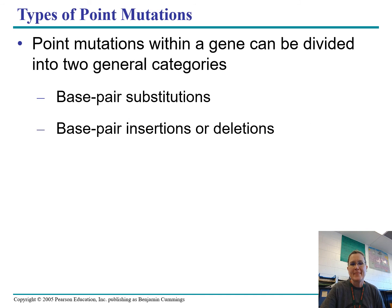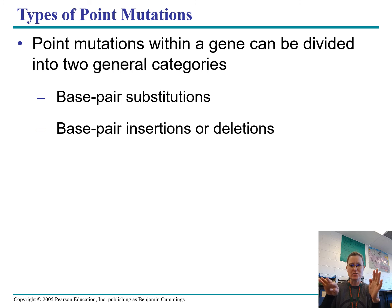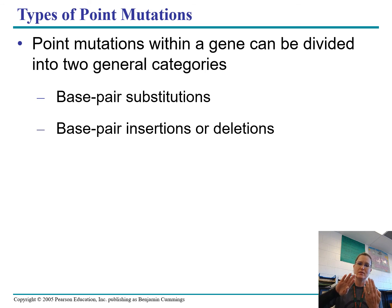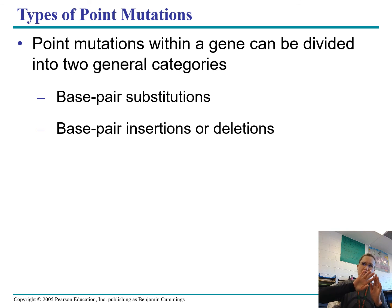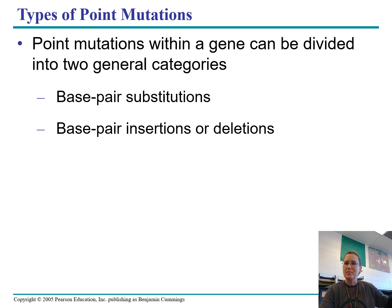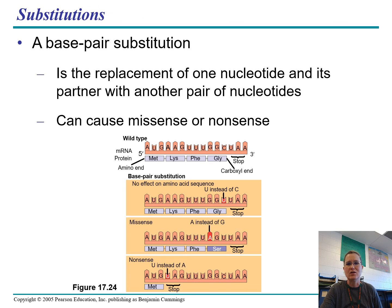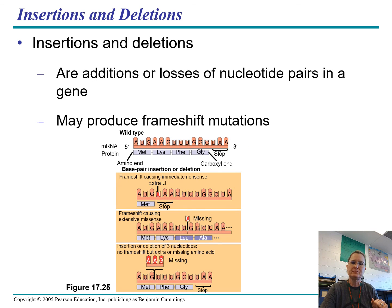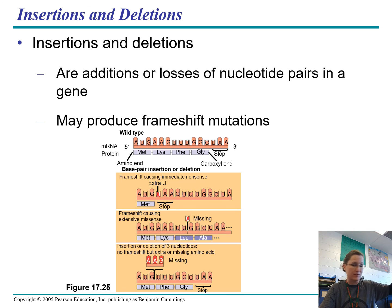Substitutions are the same thing as a point mutation. Insertions and deletions mean that if you have a strand of DNA and insert a chunk in, or take a chunk out, the rest of the strand has to shift. Downstream of the insertion or deletion, the whole rest of the strand is affected. So insertions and deletions usually cause bigger problems because you mess up the rest of your strand of DNA. That is called a frame shift — you're shifting the reading frame of the original DNA by either adding or removing material, messing up the sentence for the rest of the DNA.